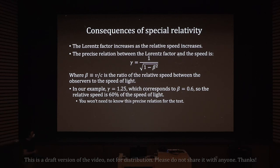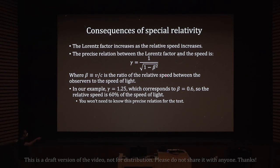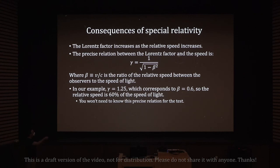The Lorentz factor increases as the relative speed increases. The precise relation is that gamma equals one over the square root of one minus beta squared, where beta is the ratio of the relative speed to the speed of light. In our example, Bob is moving at 60% of the speed of light, so gamma equals 1.25, meaning time is dilated by 25%, and this corresponds to beta equals 0.6. You won't need to know this precise relation for the test.